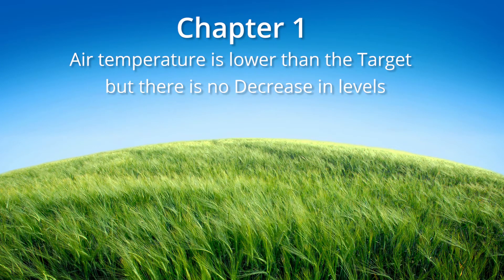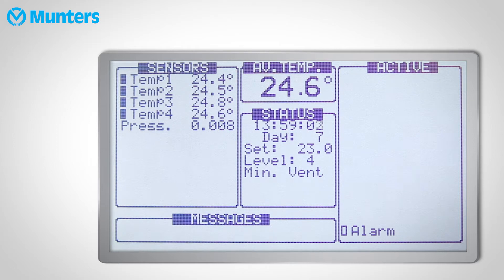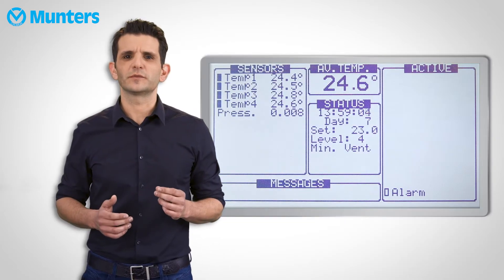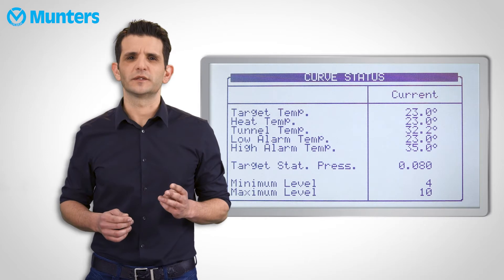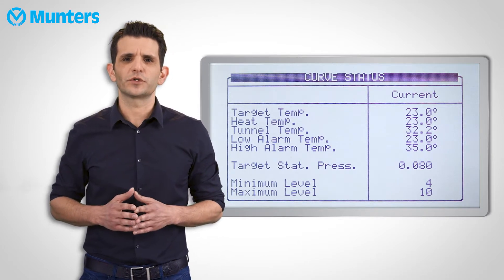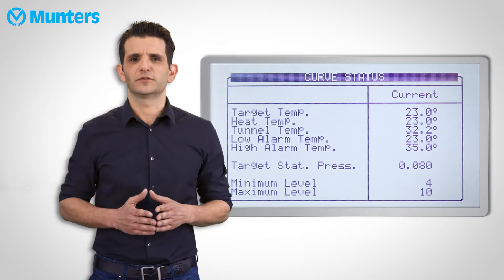The air temperature dropped below target temperature, so why didn't ventilation levels drop as well? In theory, as the temperatures drop, the ventilation levels should go down as well. If they didn't, then you're probably at your minimum ventilation level. For a quick view of the minimum level, press the number 3 button on your main screen. This hotkey will show you the minimum and maximum levels.